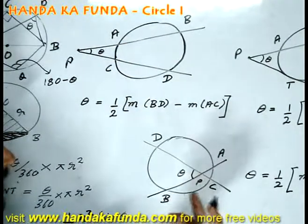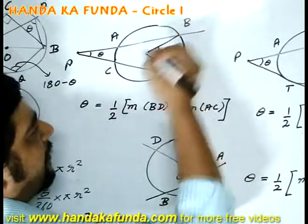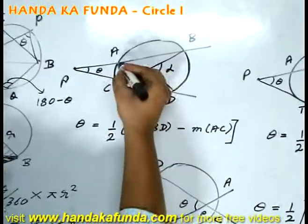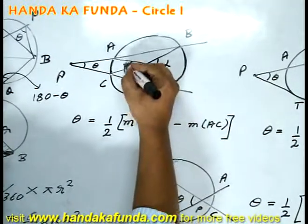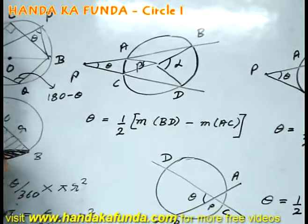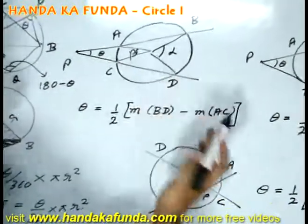What is the measure of the arc? Measure of the arc is whatever angle that the arc sustains at the center. So, if the arc BD sustains alpha at the center and this sustains beta at the center, then my answer for theta will be alpha minus beta by 2.